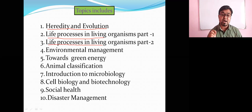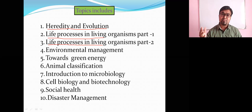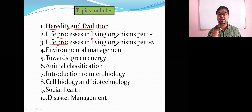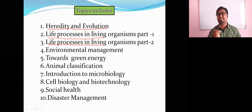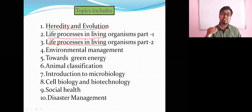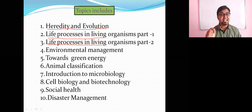The next topic is Life Processes in Living Organisms, Part 2. We are going to discuss reproduction. Basically there are two types of reproduction: asexual reproduction and sexual reproduction. Asexual reproduction occurs in unicellular and multicellular organisms. Next, we will discuss sexual reproduction — plant and human reproduction. We will discuss the most developed part of a plant for reproduction, which is the flower. In human reproduction, we will discuss the male reproductive system, female reproductive system, menstrual cycle, and modern reproductive technologies.